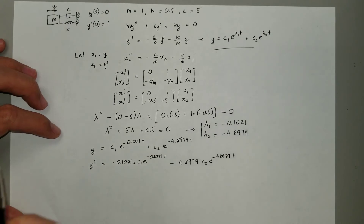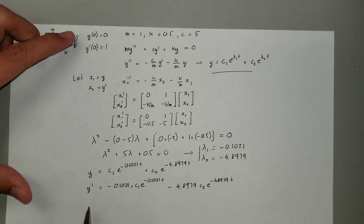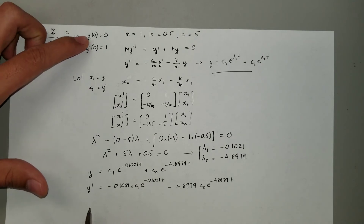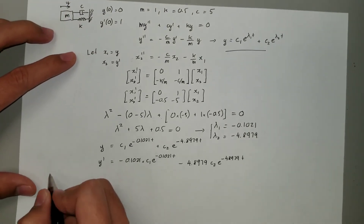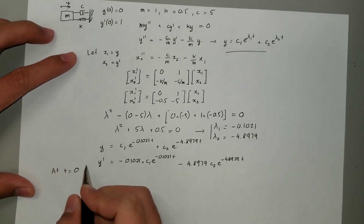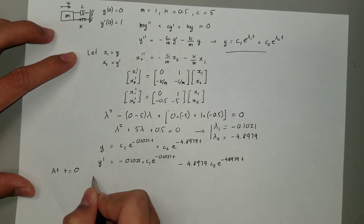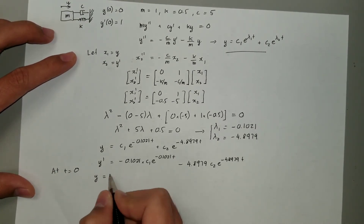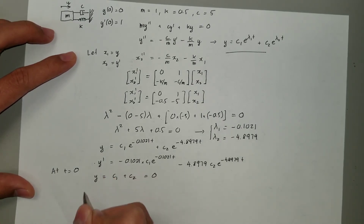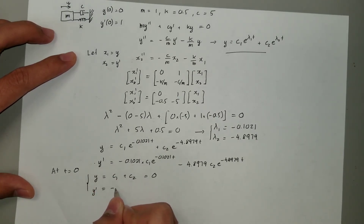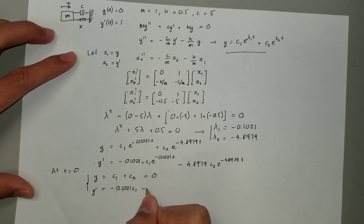Referring back to our boundary conditions: y at t equals 0 equals 0, and y' at t equals 0 equals 1. Applying these, at t equals 0: y equals c1 plus c2 equals 0, and y' equals -0.1021 c1 minus 4.8979 c2 equals 1.